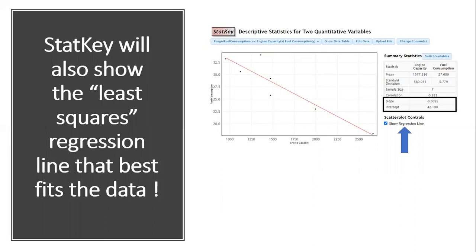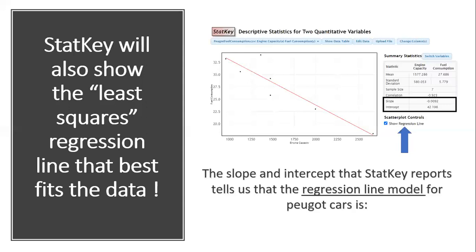Now, the parameters for that line are shown at the bottom of the summary statistics. We see that that slope of the regression line is negative 0.0092, and we see that the intercept is 42.198 miles per gallon. So what that means is that the slope and intercept that have been reported, they give us the regression line model. That regression line model could help us to make a prediction about the fuel consumption of a Peugeot car that isn't a diesel car based off of these numbers. If we multiply the engine capacity in cubic centimeters by 0.0092 and then subtract that from 42.198, that'll give us a prediction for fuel consumption of the car.